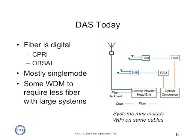The signals carried over fiber are digital, typically one of two protocols: CPRI or OBSAI. The fiber is generally single mode, and some systems even use wavelength division multiplexing to require fewer fibers in very large systems. Some of these systems can have hundreds of antennas spread out over relatively large areas.